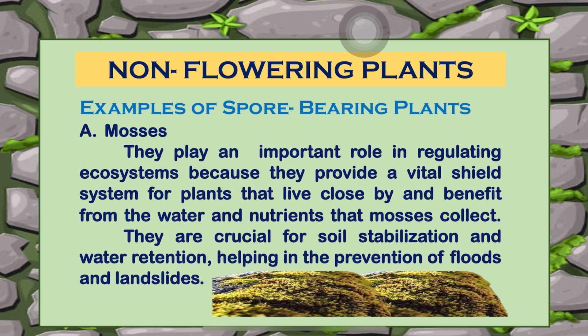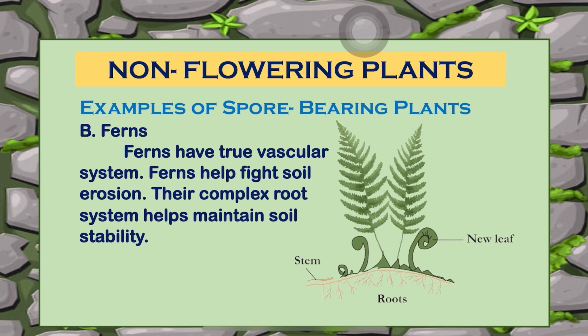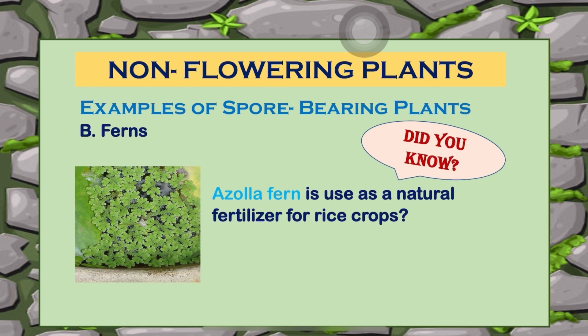Ferns produce spores that look like brown spots and are dust-like in nature. When spores mature, they explode and the released substances come in contact with soil, initiating reproduction. Ferns have true vascular systems. Ferns also help fight soil erosion, as their complex root systems help maintain soil stability.